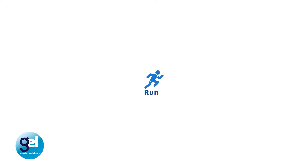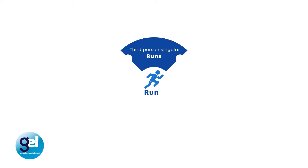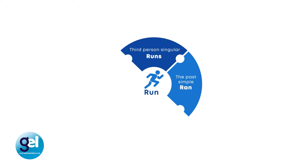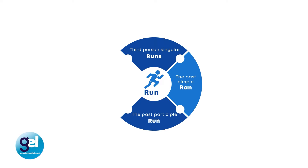Let's have a look at main verbs, starting with an irregular verb. The base form of this irregular verb is 'run.' If we change that to the third person singular — he, she, or it — we add an S, so 'run' becomes 'runs.' In the past simple it would be 'ran.' In the past participle it would be 'run.' And in the present participle we have 'running.'